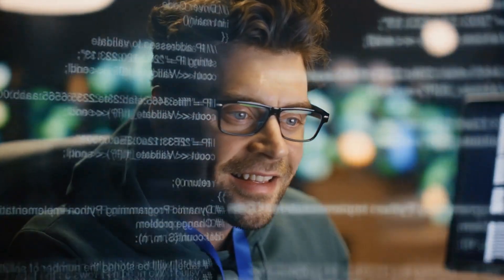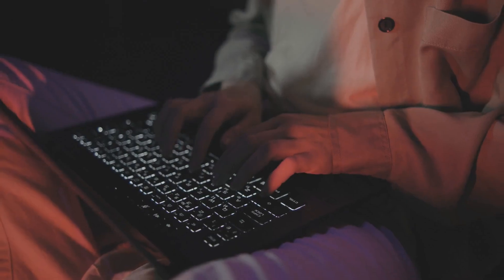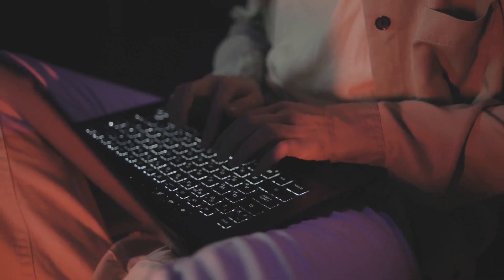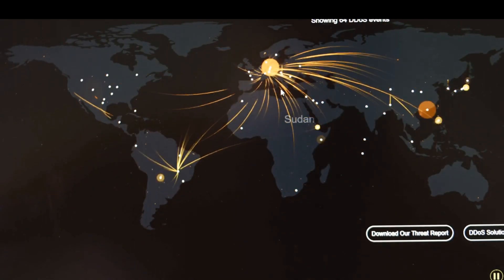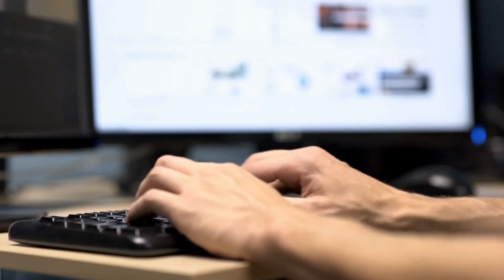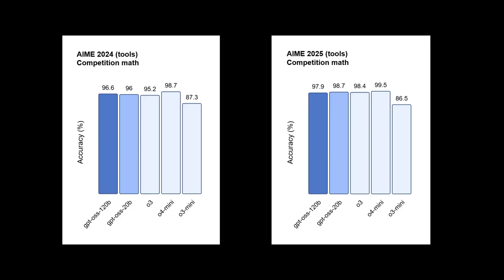If you're wondering why you should care about open-weight models, let me break this down for you. These models can be downloaded and run completely offline on your own hardware. No internet connection required once you've got them set up. No data being sent to OpenAI servers — it's all happening locally on your machine. And the performance is absolutely mind-blowing. The GPT-OSS-120B model is achieving near parity with OpenAI's O4 Mini on core reasoning benchmarks — performance basically matching some of OpenAI's best closed models, but now it's open source and you can run it yourself.